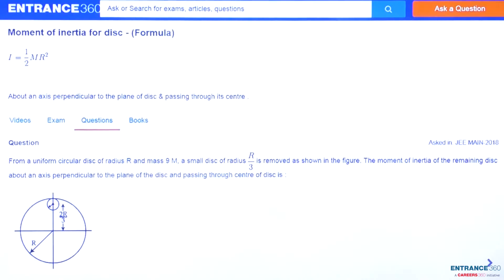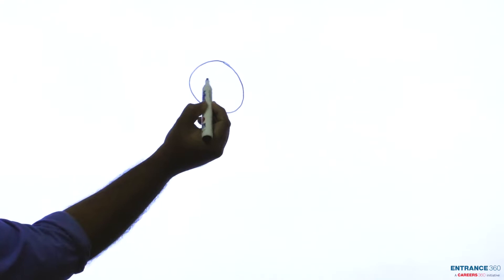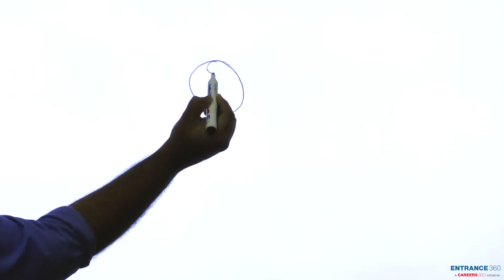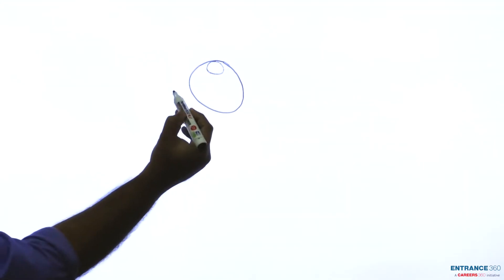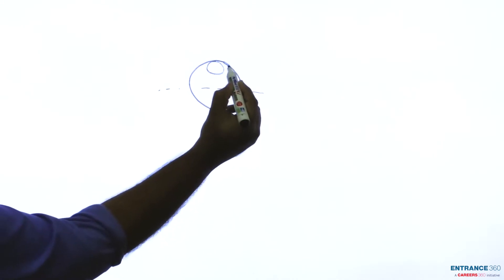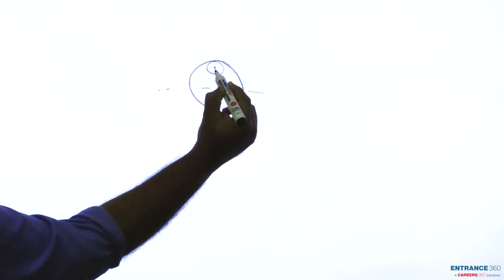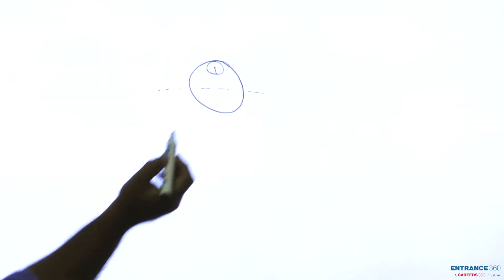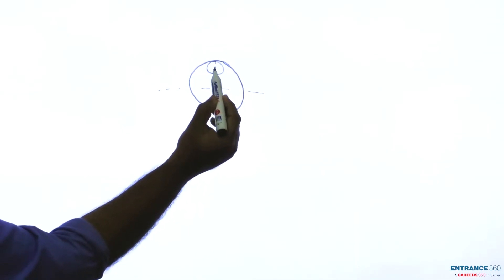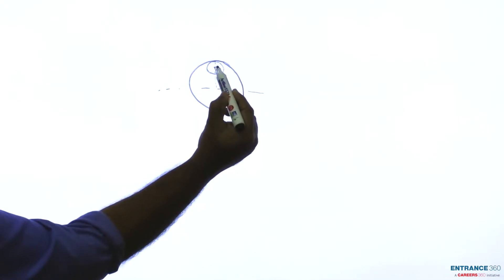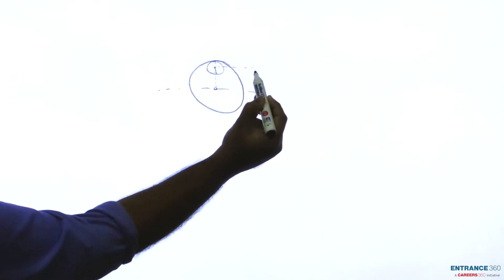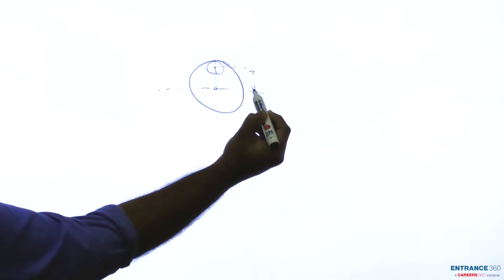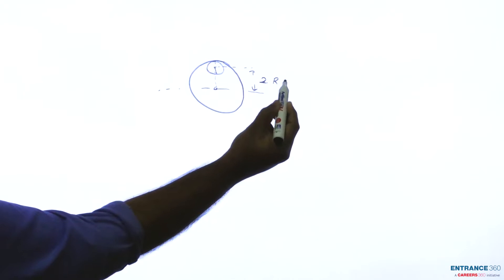Let's redraw the figure — a disk of radius r from where we are removing a small disk of radius r/3. The radius of the small disk is r/3 and the radius of the total disk is r. The distance from the center of the disk to the center of the small disk will be r minus r/3, which is 2r/3.